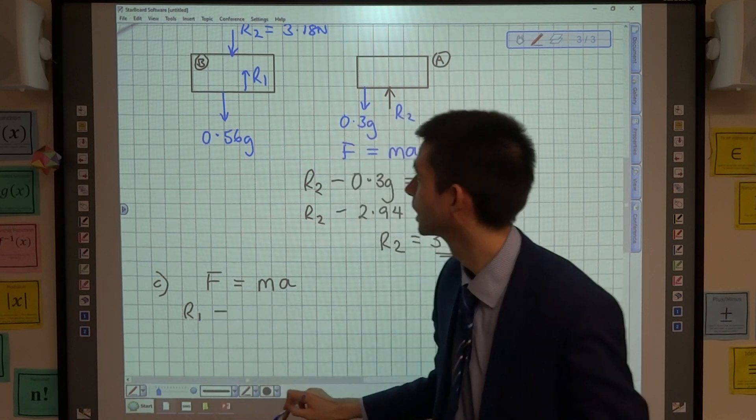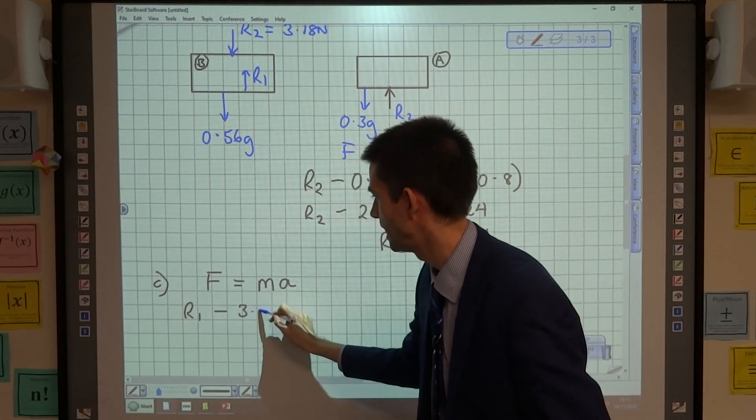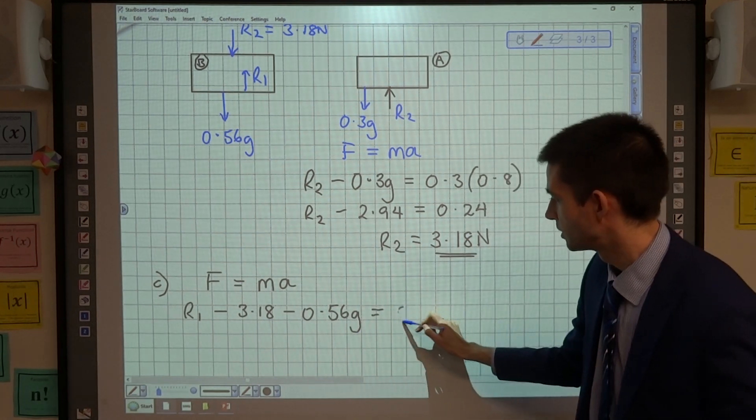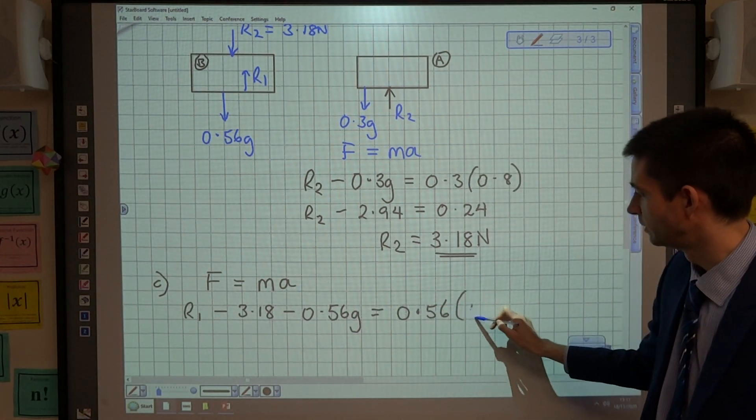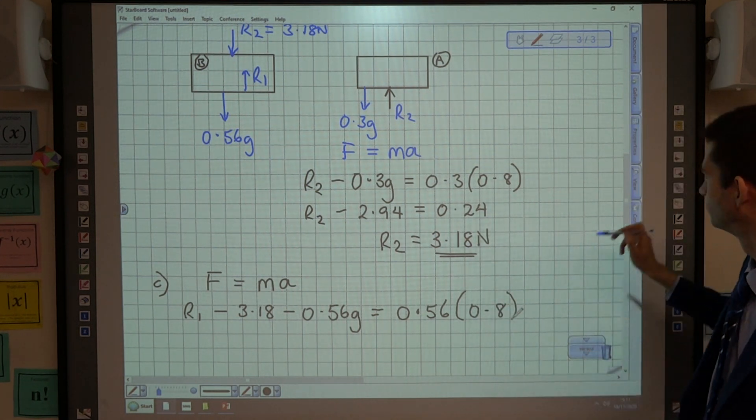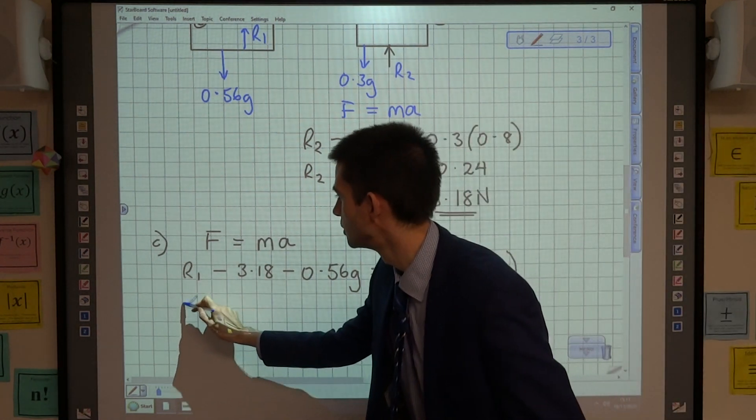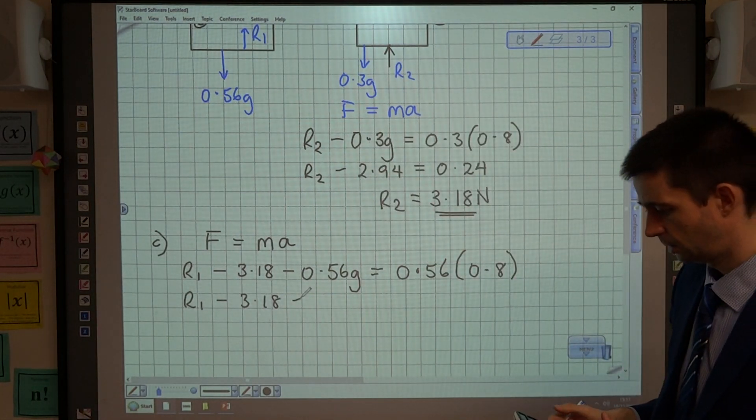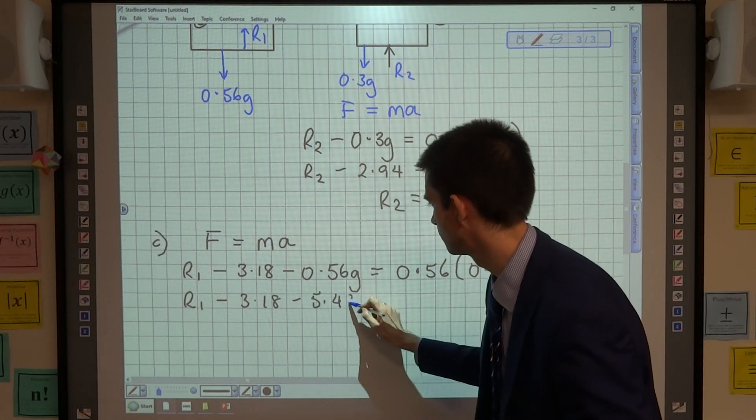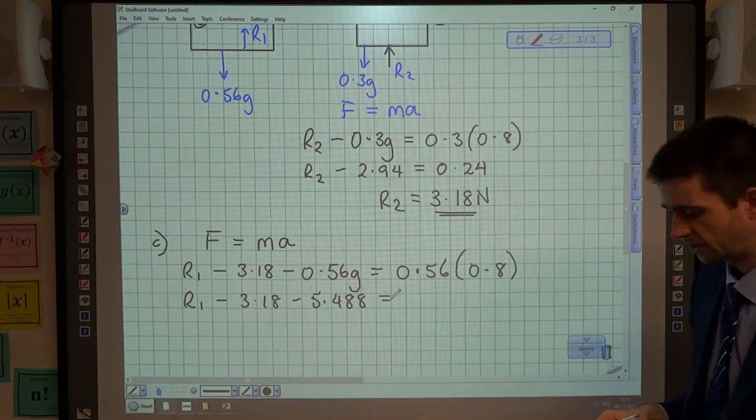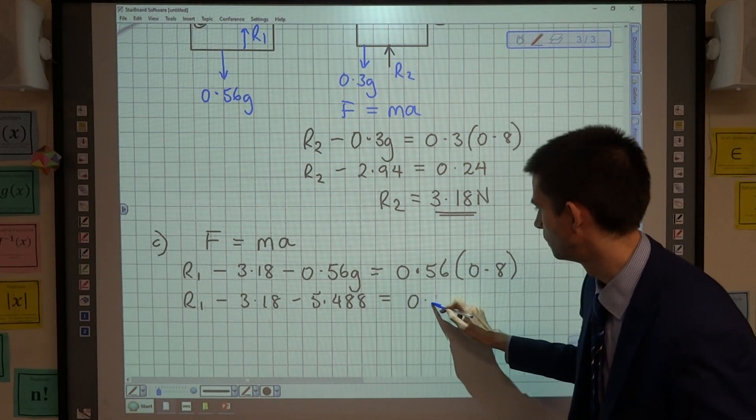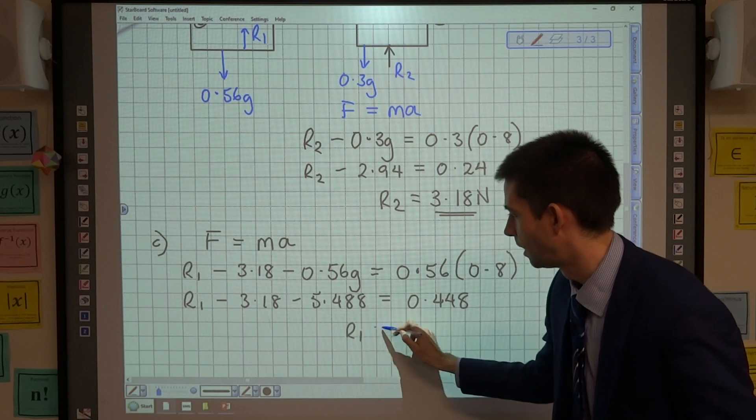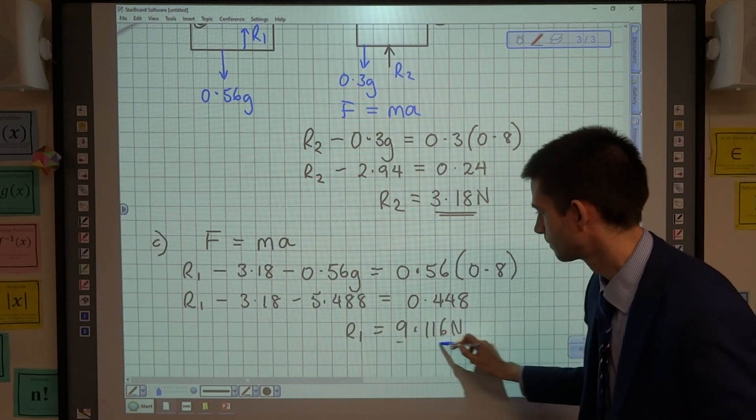Forces up, which is R1, the one we're trying to find. Minus forces down, which is this R2, 3.18, and the weight of B, which is 0.56g, is going to equal the mass of just B, because we're resolving for B, multiplied by 0.8. So working this out here, R1 minus 3.18 minus 0.56 times 9.8, which is 5.488, is equal to 0.56 times 0.8, which is 0.448. And when we add those two values over, we get R1 to be 9.116 newtons.